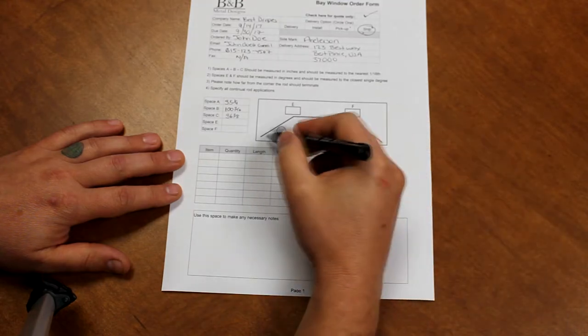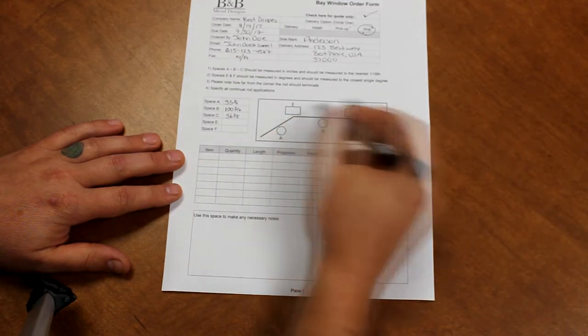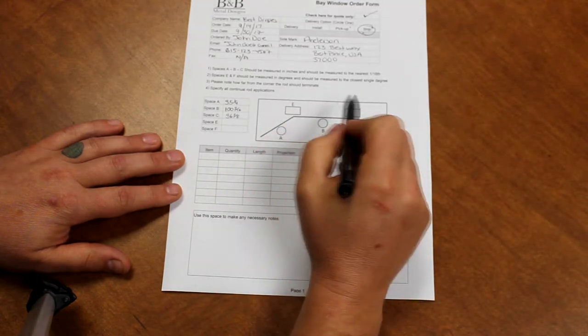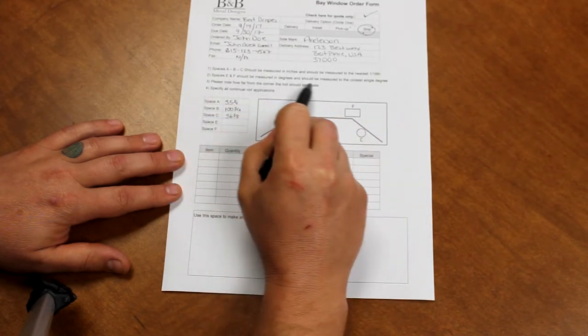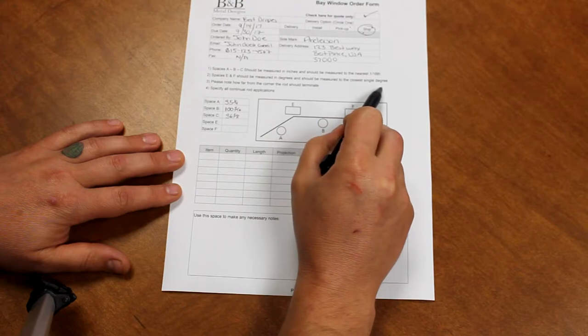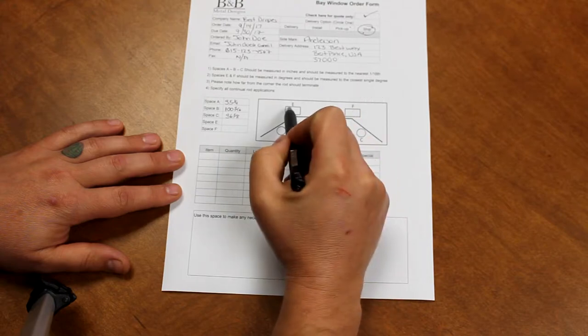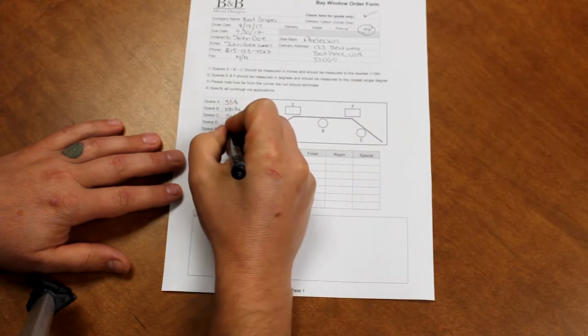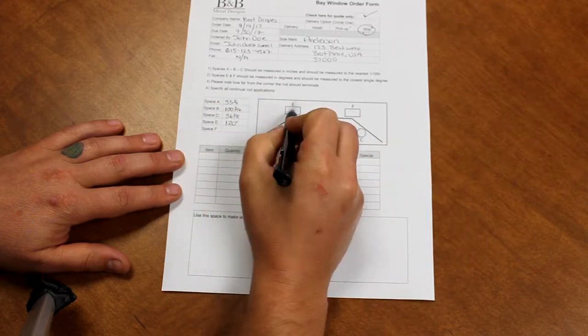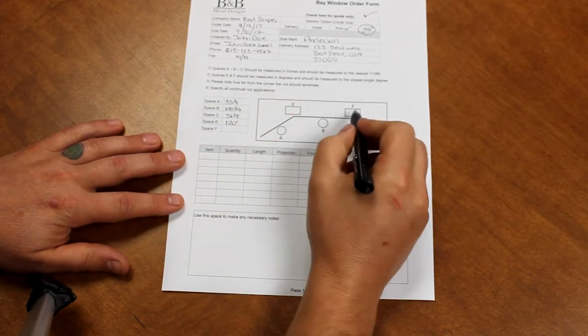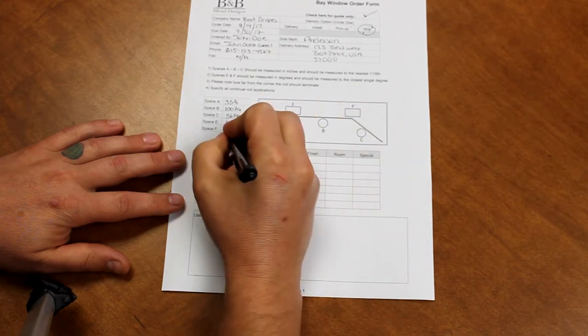Now that we have all of our rod lengths measured and written down we can go to spaces E and F. E and F should be measured in degrees and should be measured to the closest single degree. For space E we have 120 degrees. For space F we have 121 degrees.